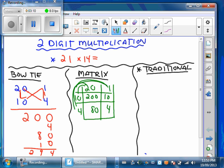Well, now what we have to do is we have to add them up. So, 200 plus 10 is 210, and 80 plus 4 is 84. We add those numbers together to get our answer of 294.